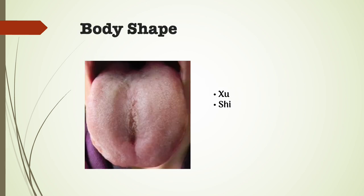Body shape: if the tongue is puffy with scalloped edges or indented teeth marks, it may indicate malabsorption of nutrients. A very thin tongue may be a sign of dehydration. We would look at the body shape to determine a deficiency or excess condition.